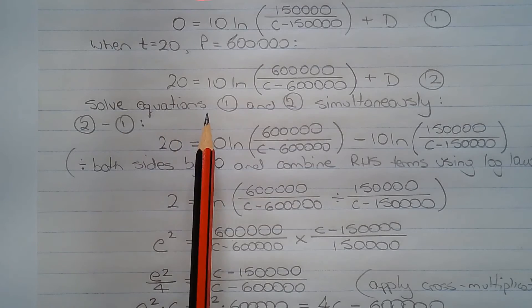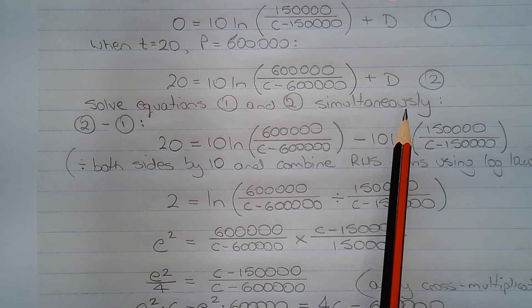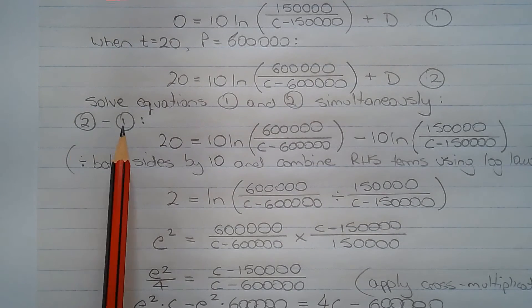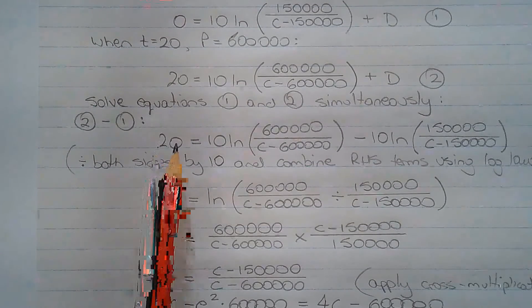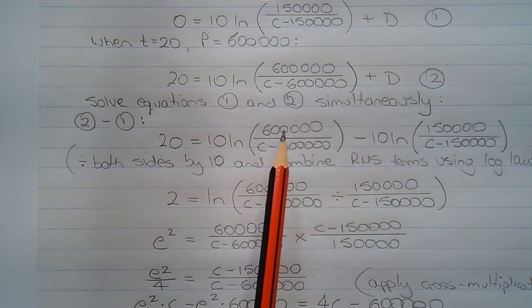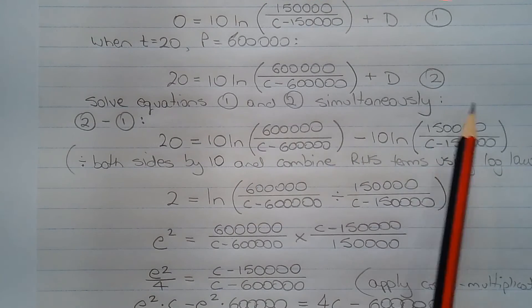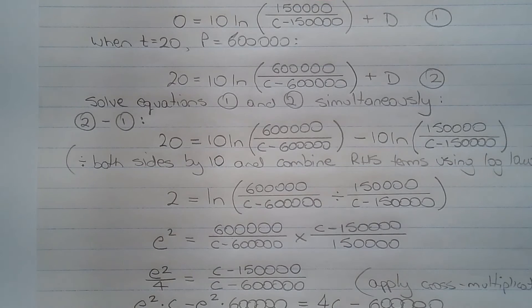Next we're going to solve equations 1 and 2 simultaneously by eliminating d. So equation number 2 minus equation number 1. We get 20 equals 10 ln of 600,000 over (c minus 600,000) minus 10 ln of 150,000 over (c minus 150,000).